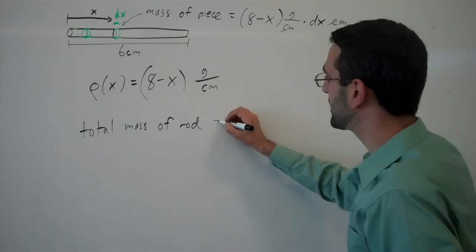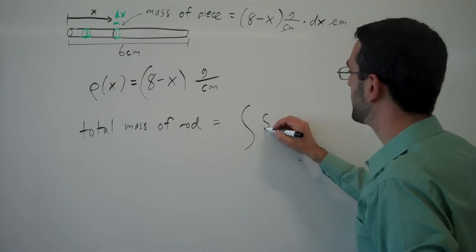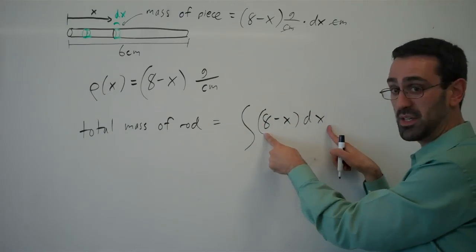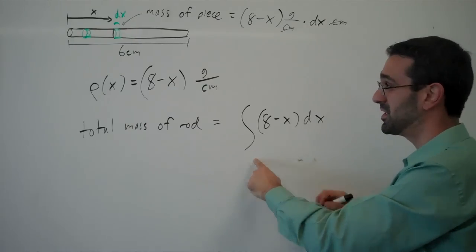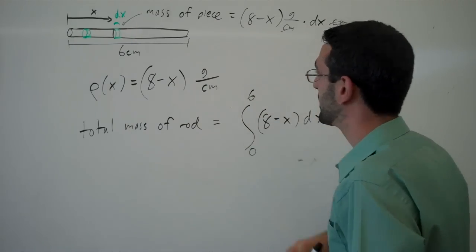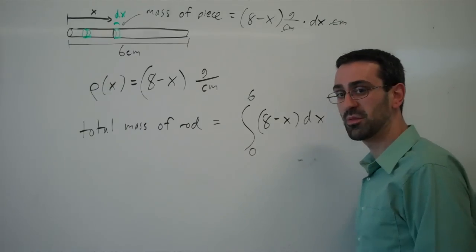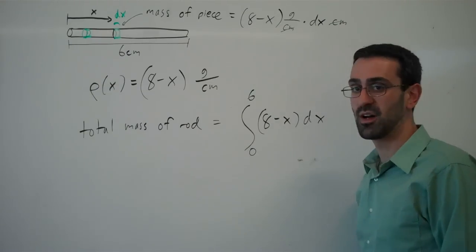To find the total mass of the rod, we're going to add up all those little pieces. That's the mass of one piece. We're going to add up all the pieces from the start of the rod to the end of the rod, and that's going to give us the total mass of this rod.